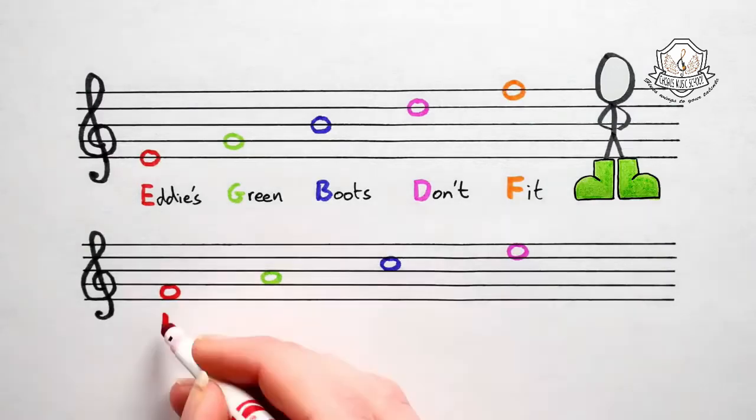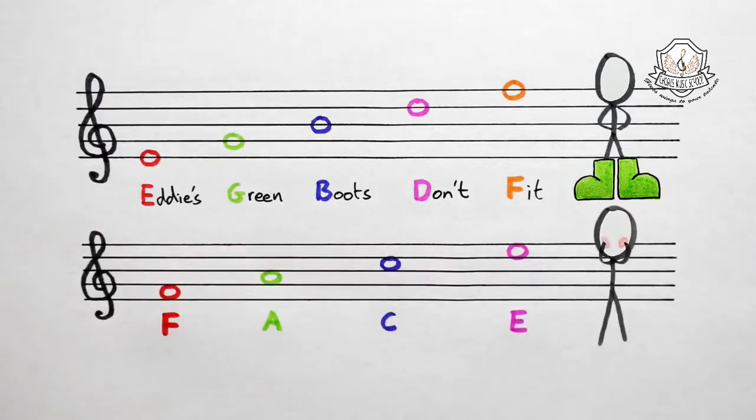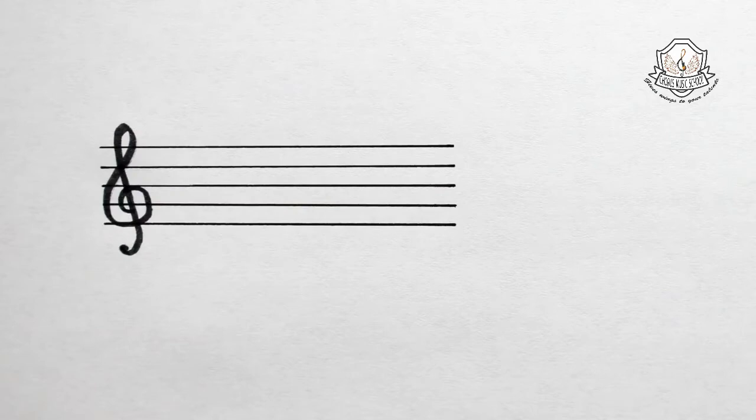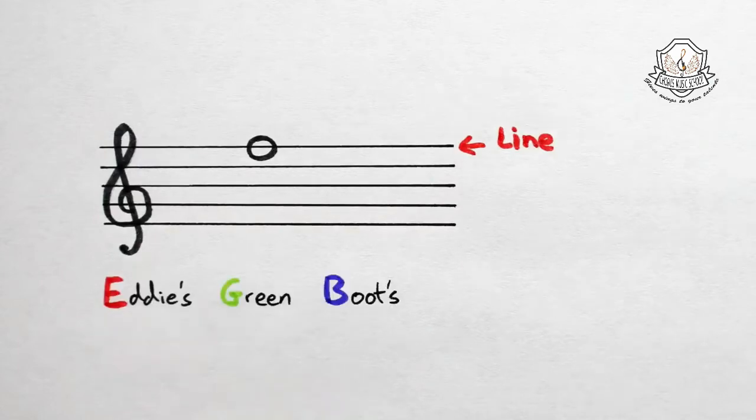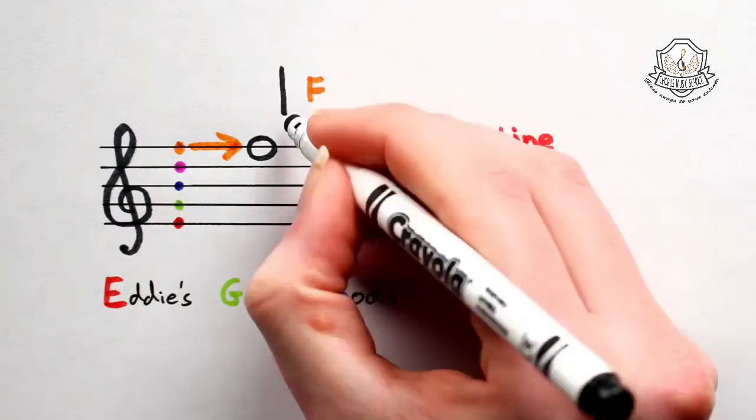Okay, so let's figure out the pitch name of this note. It's on a line, so we should use the Eddie's Green Boots Don't Fit rhyme. Starting at the bottom line, we say Eddie's, Green, Boots, Don't, Fit - F for Fit. So our note is called F. Super.